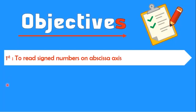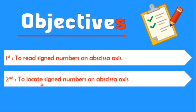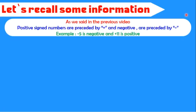Second objective is to locate signed numbers on abscissa axis. Let's recall some information. As we said in the previous video, positive signed numbers are preceded by plus sign and negative are preceded by minus sign. For example, minus 5 is negative because it is preceded by minus sign, and plus 11 is positive because it's preceded by plus sign.